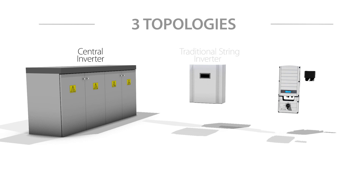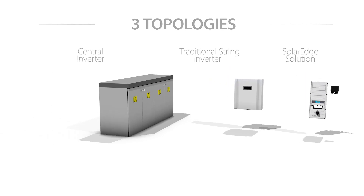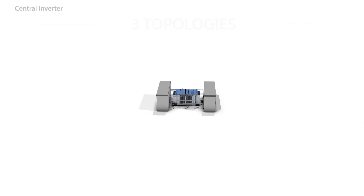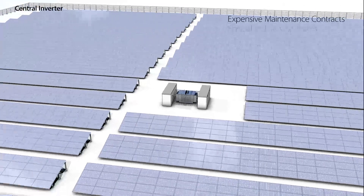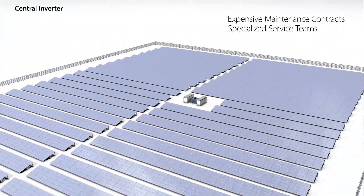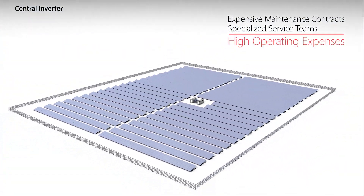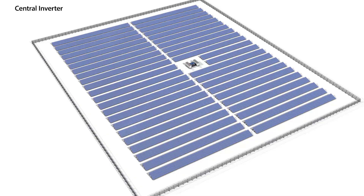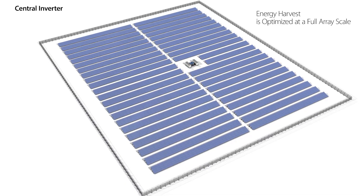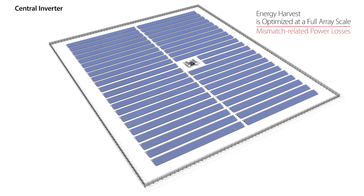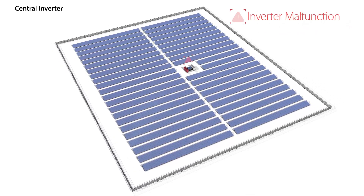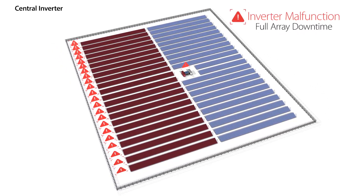A central inverter, a traditional string inverter, and the SolarEdge solution. Let's first take a look at central inverters. Central inverters have expensive maintenance contracts and can only be serviced by specialized teams. This leads to high operating expenses. In addition, energy harvest is optimized at a full array scale, leading to mismatch-related power losses, and every inverter malfunction results in full array downtime.